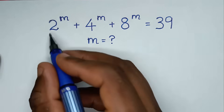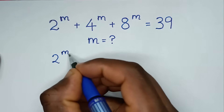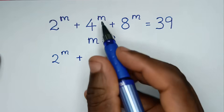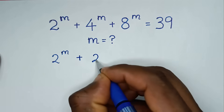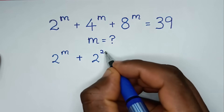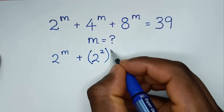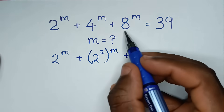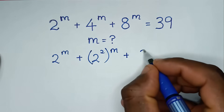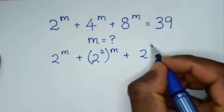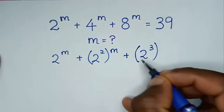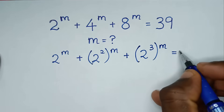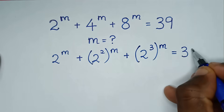It will be 2 power of m plus 4 power of m — 4 is the same as 2 squared, so bracket power of m — plus 8 power of m, where 8 is the same as 2 power of 3, then bracket this power of m, is equal to 39.